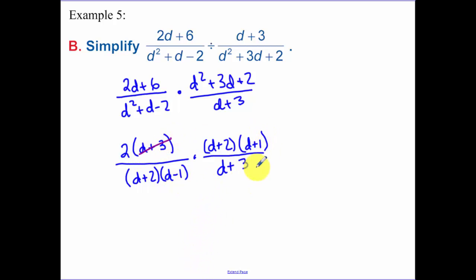So now again, go through and cancel. d plus 3. d minus 1 and d plus 1 don't cancel. Those aren't exactly the same, and I can't factor out a negative from one of them to get the other one because the d's are both positive. So those cancel. I'm just left with 2, d plus 1 over d minus 1. And leave that in the factored form, so we are done.